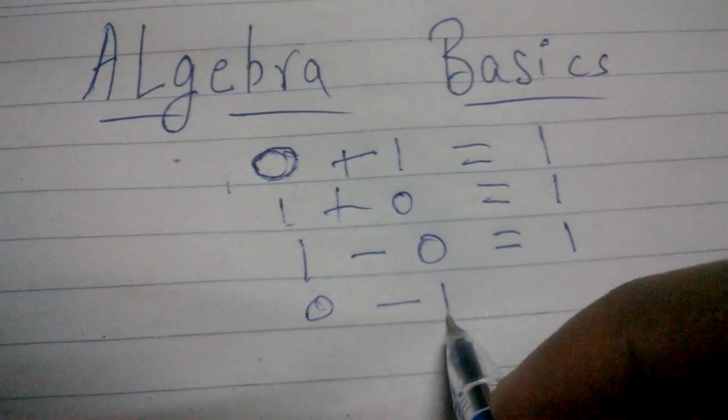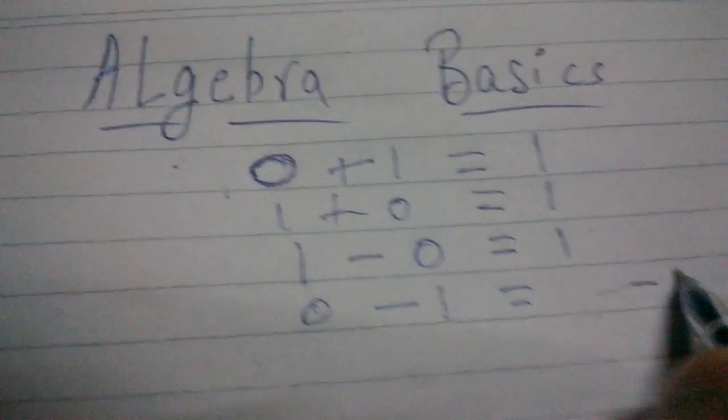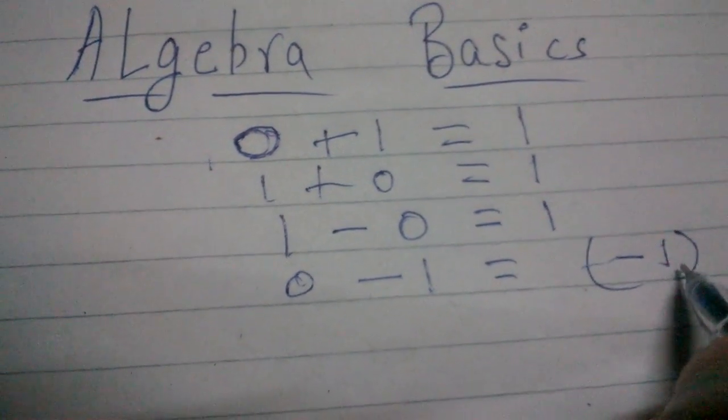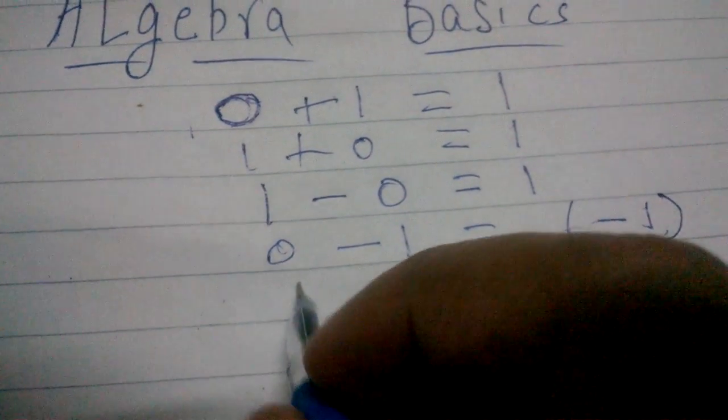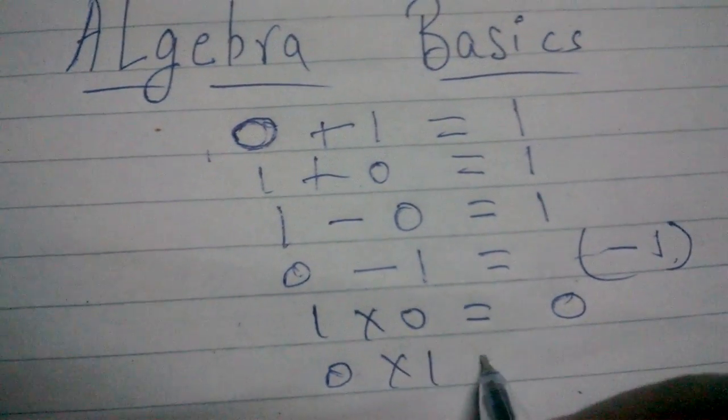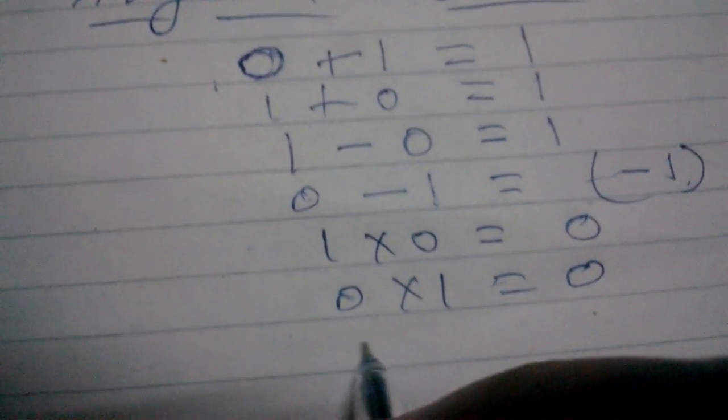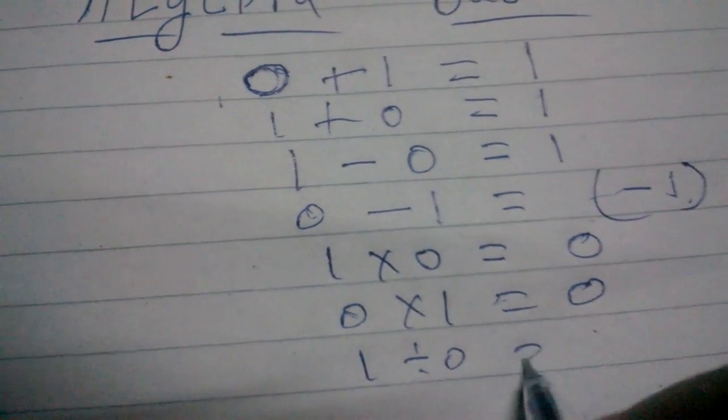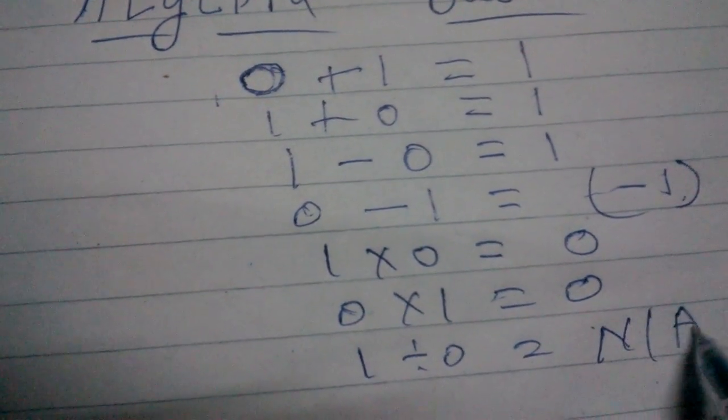0 minus 1 is equal to minus 1, the negative of that number. Okay, 1 multiply by 0 is equal to 0, 0 multiply by 1 is equal to 0.